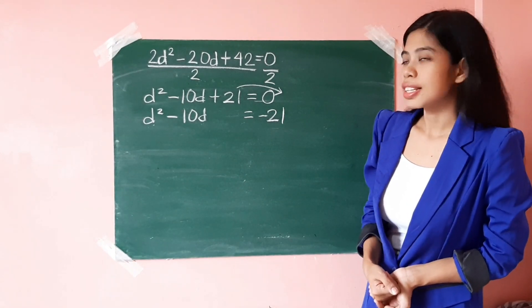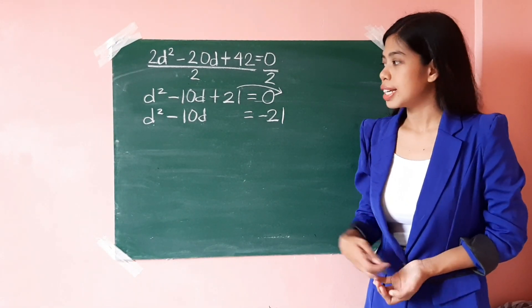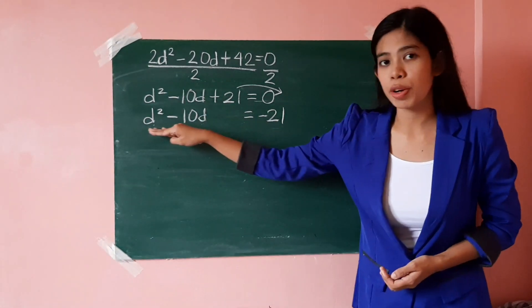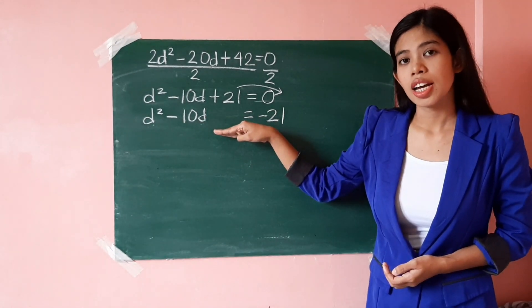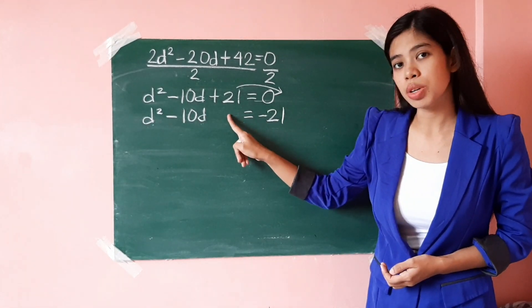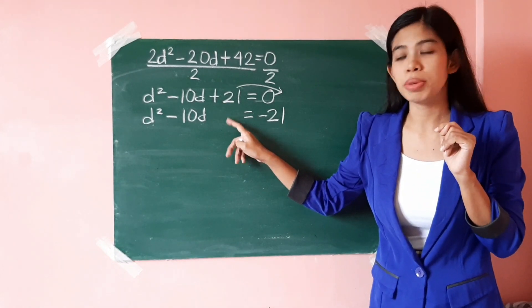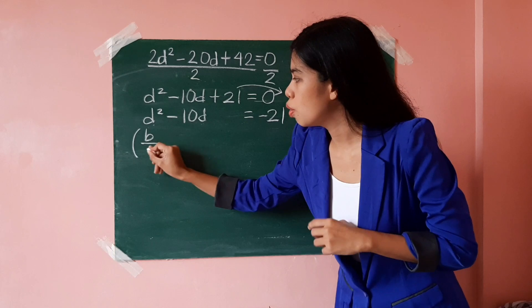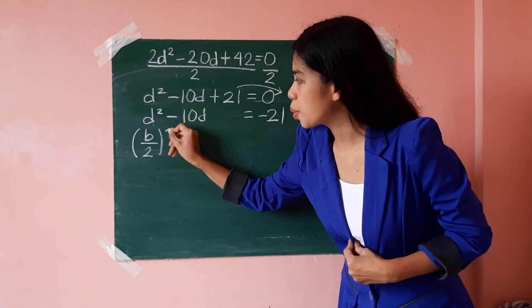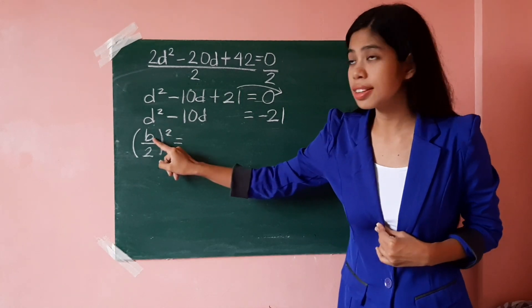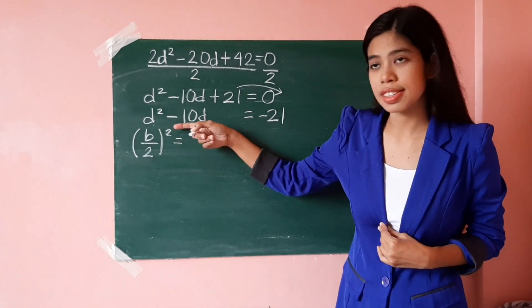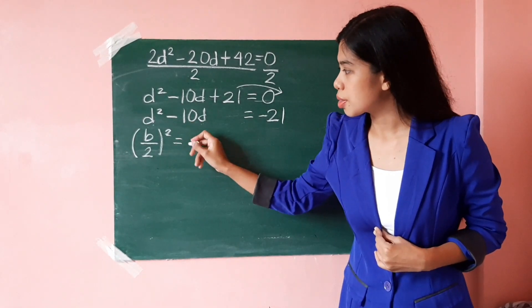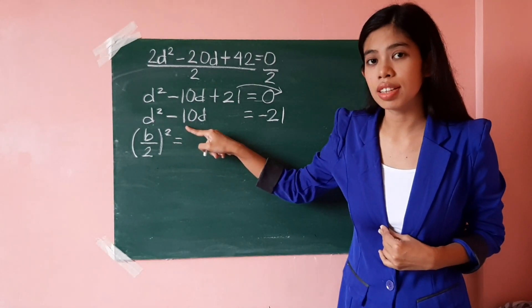Now, the next thing we have to do is to transform this into a perfect square trinomial. And for us to get the third term, we just have to apply this formula. So, b over 2 squared, wherein the value of b is this one, the numerical coefficient of the linear term.